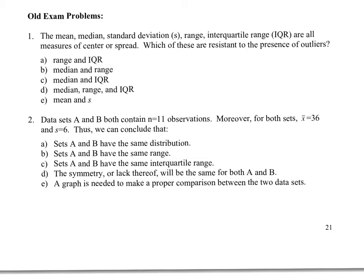Let's review these exam problems. For the first one, which are resistant to outliers, we understand that it is the median and the IQR that are resistant to outliers. So the answer here is C.